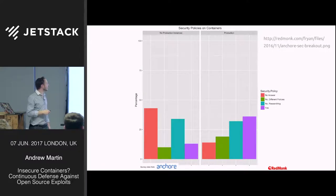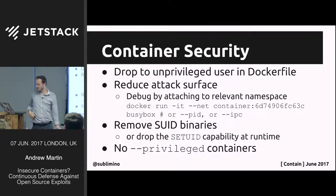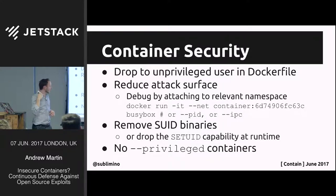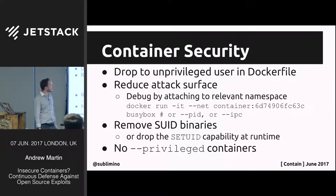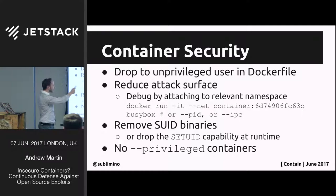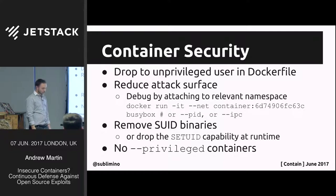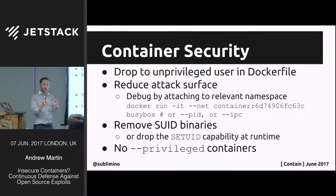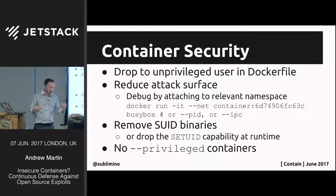The number of people actually using security policies in production is reprehensible — I hope you'll all use them after this. Container security basics: drop to an unprivileged user, because the user namespace mapping being imperfect means running as a non-root user gives a huge security benefit. Reduce debugging tools in containers — run the minimum stack possible. You can actually attach to a container's namespace: using double-hyphen net with a container ID, if you have a misbehaving nginx process or a Go binary running in a scratch image, you can attach to its network namespace with a debug image and run sysdig to see what's happening in that namespace.